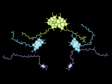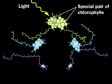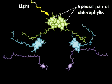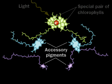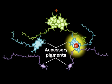Let's look at how this happens. A special pair of chlorophyll molecules absorbs a photon and is raised to a higher energy level. An electron from the excited chlorophyll dimer is passed to one of the accessory pigments, pheophytin.